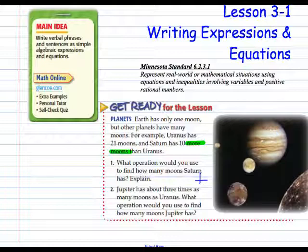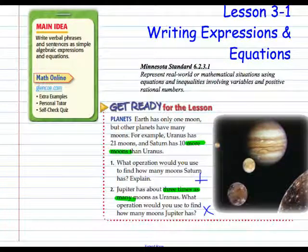In example 2, Jupiter has about 3 times as many moons as Uranus. What operation would we use to find how many moons Jupiter has? 3 times as many would indicate multiplication.